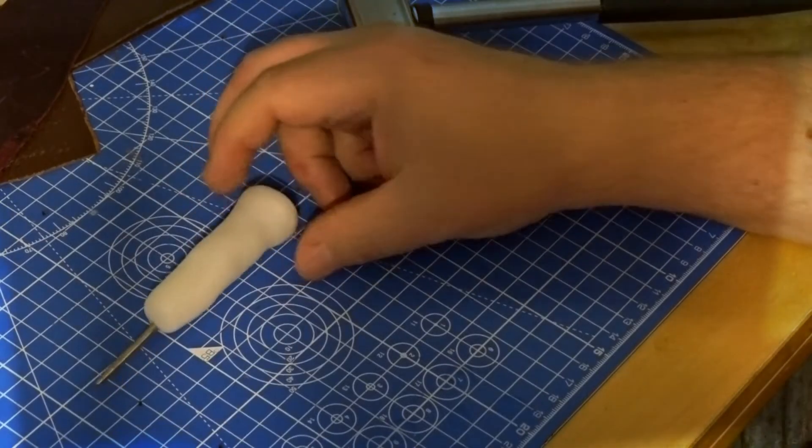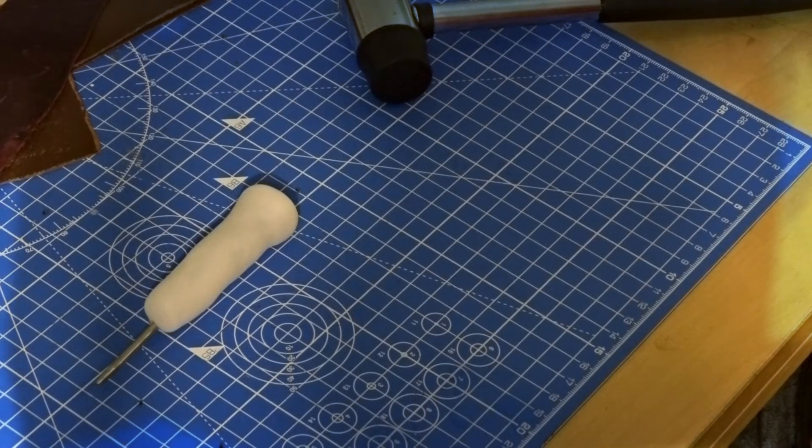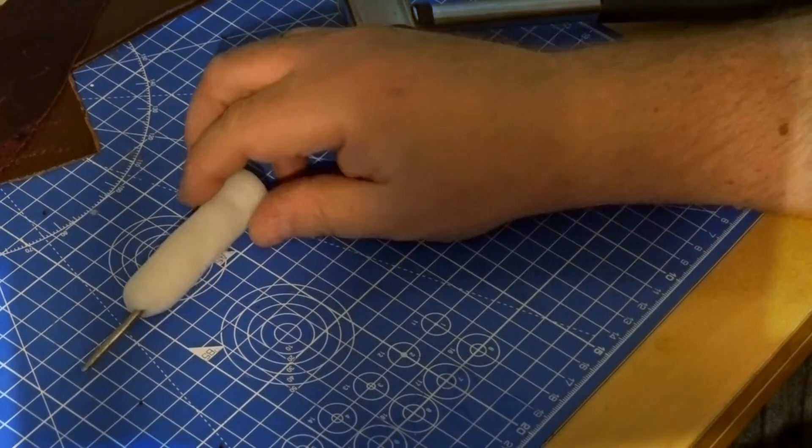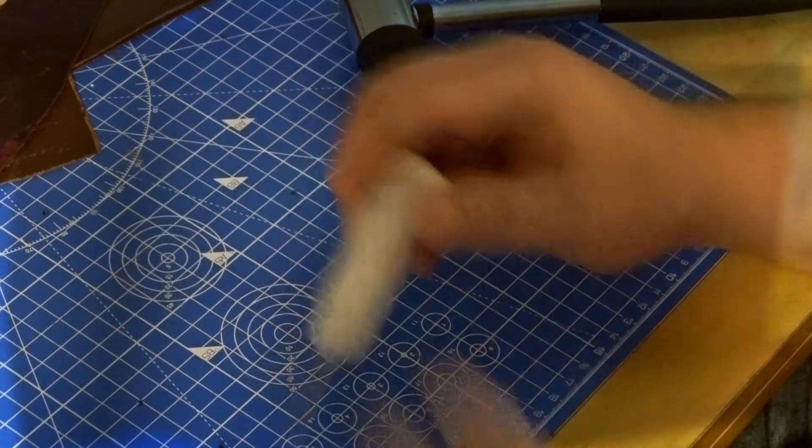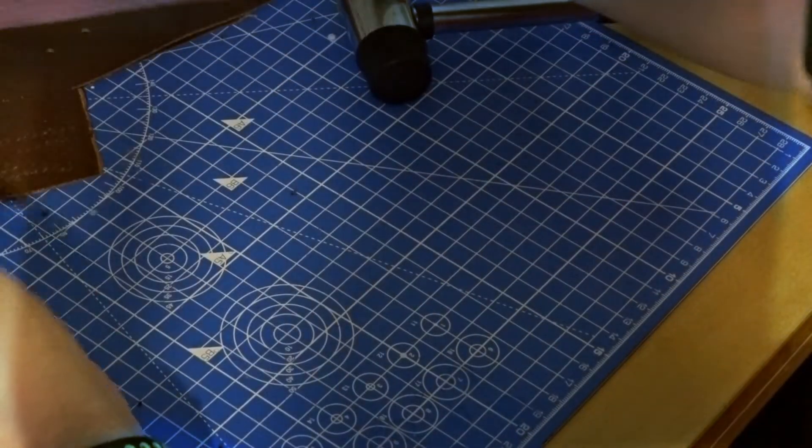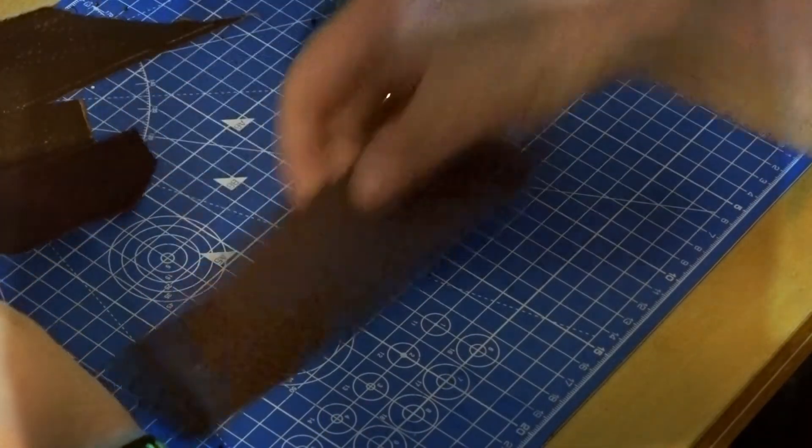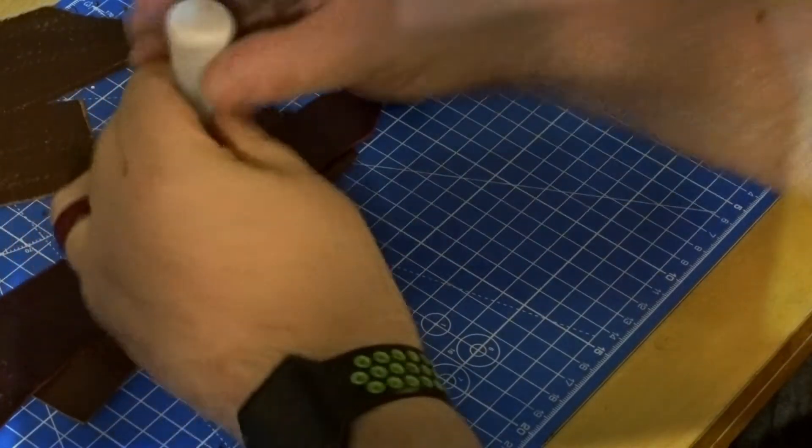We've just cut to where it's cooled. You can see it's turned white now and it's ready to use. Just a bit of scrap leather there. It's now much more comfortable to hold.